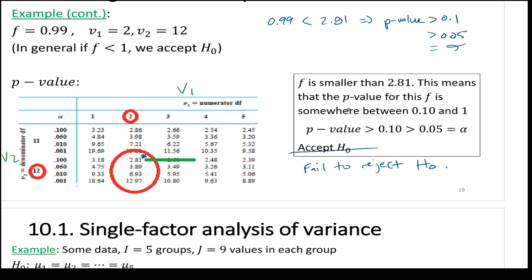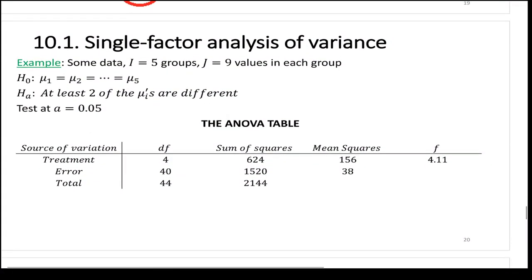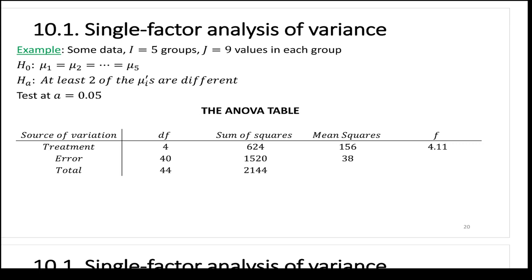Another example: five groups, nine data points per group. Test at alpha equals 0.05. Fill in the ANOVA table: V1 equals 5 minus 1 equals 4; V2 equals 5 times 9 minus 1 equals 40. Total degrees of freedom is 44. Calculate SSTR, SST, subtract to get SSE. Then MSTR equals 624 divided by 4; MSE equals 1520 divided by 40, which is 38.